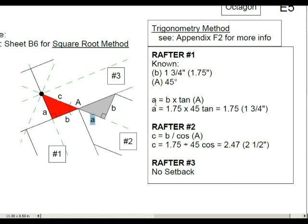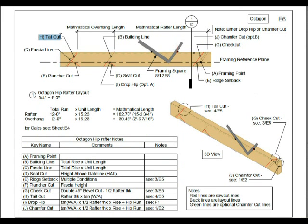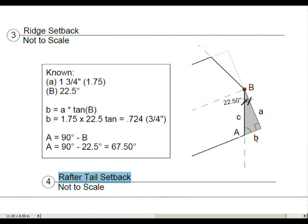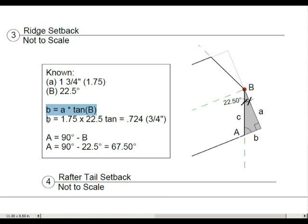So this would be A that we're going to be solving for. You can either solve for this using the trigonometry method or the methods we've used in the past. Next, your tail cut — your rafter thickness times the tangent of the working angle. Working angle is 22.5 degrees — that's angle B. We know what A is: that's 1 and 3 quarters inches. And we want to solve for B. A times the tangent of B will give you a result of 3 quarters of an inch.